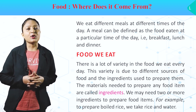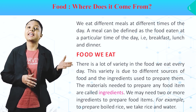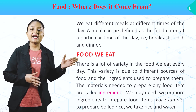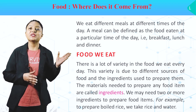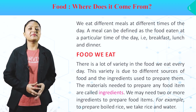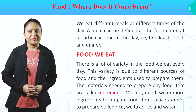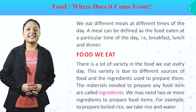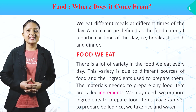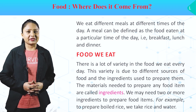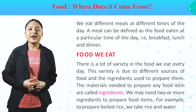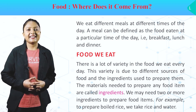Food we eat. There is a lot of variety in the food we eat every day. This variety is due to different sources of food and the ingredients used to prepare them. The materials needed to prepare any food item are called ingredients. We may need two or more ingredients to prepare food items. For example, to prepare boiled rice, we take rice and water. Food prepare karne ke liye, humain jis bhi cheezo ki zaraht hoti hai, unhye ingredients kehte hai.